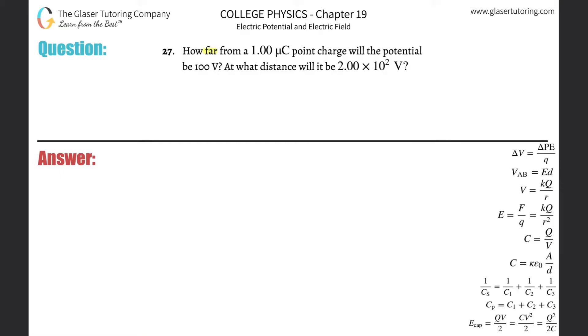Number 27, how far from a 1 microcoulomb point charge will the potential be 100 volts? All right, so here we have a point charge. It's 1 microcoulomb, in other words, it's 1 times 10 to the minus 6 coulombs.